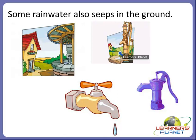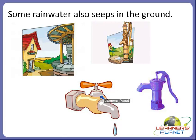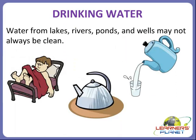In our homes we get water from the taps. There are many sources of water. We get water from the puddles, ponds, lakes, rivers, streams, dams, canals, wells, hand pumps and taps.